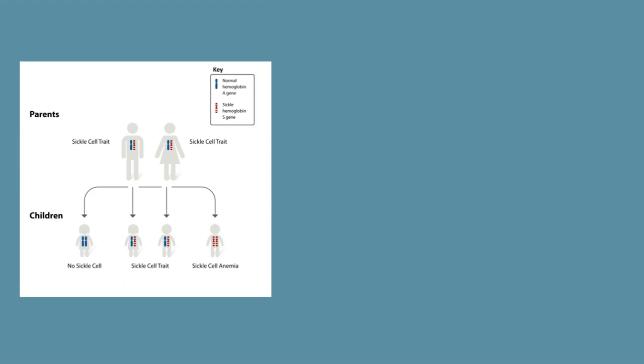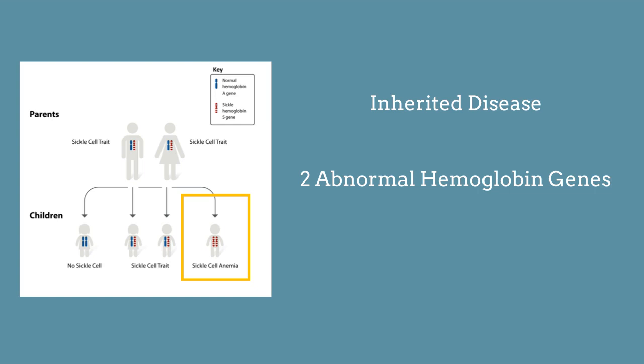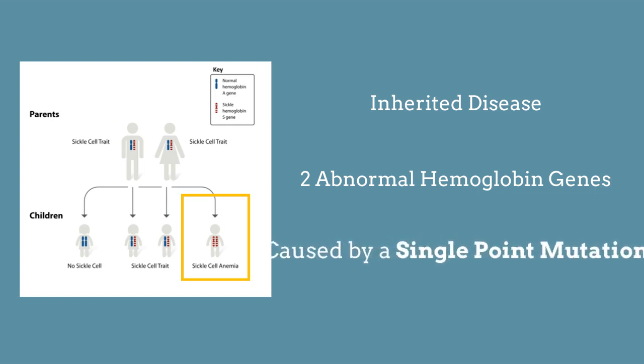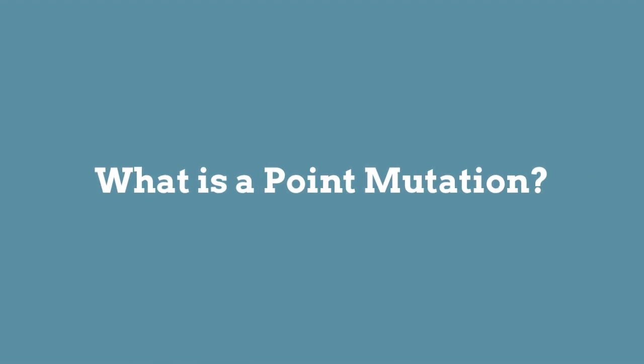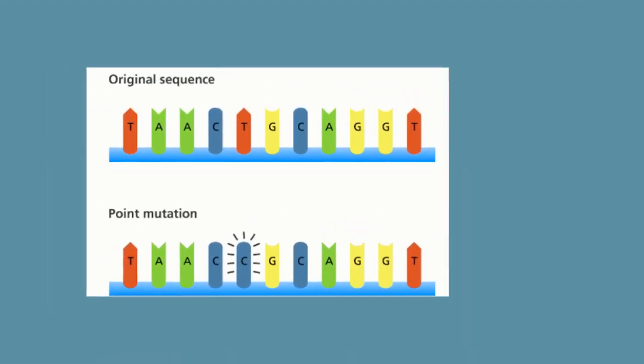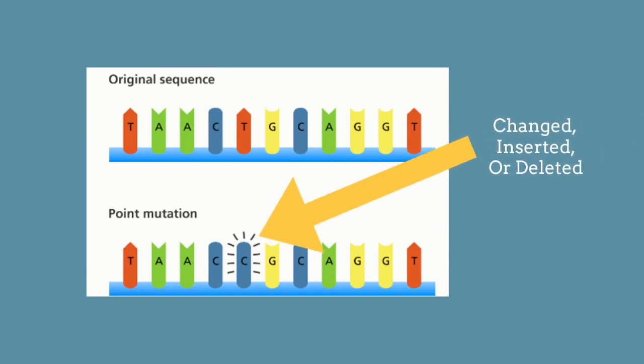Sickle cell disease is an inherited disease, and individuals with sickle cell disease inherit two abnormal hemoglobin genes from their parents. These abnormal hemoglobin genes are predominantly caused by a single point mutation in a specific gene for a subunit of the hemoglobin protein. A point mutation is where a single building block of DNA, known as a base pair, is changed, inserted, or deleted from the DNA sequence that makes up the gene.